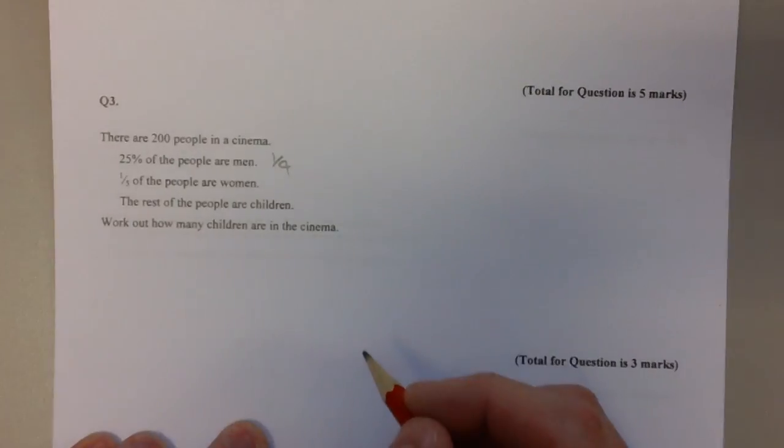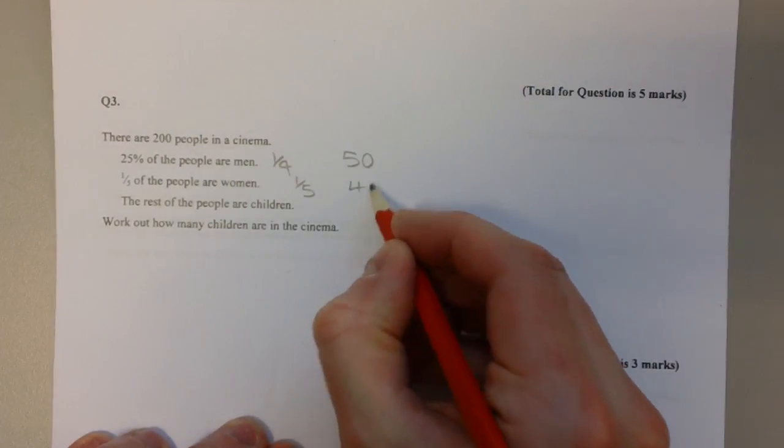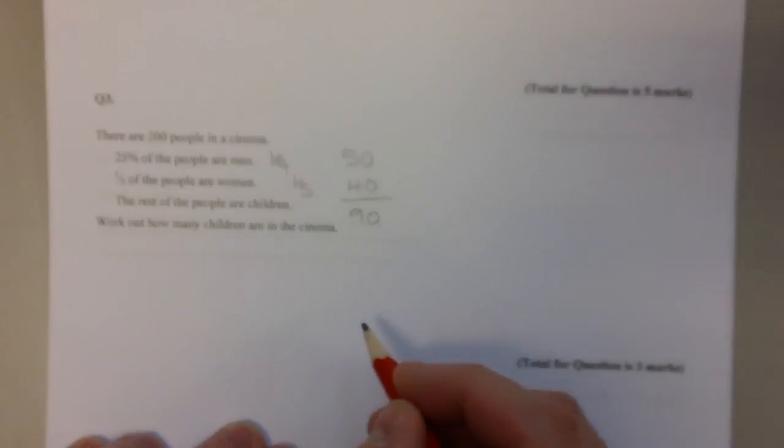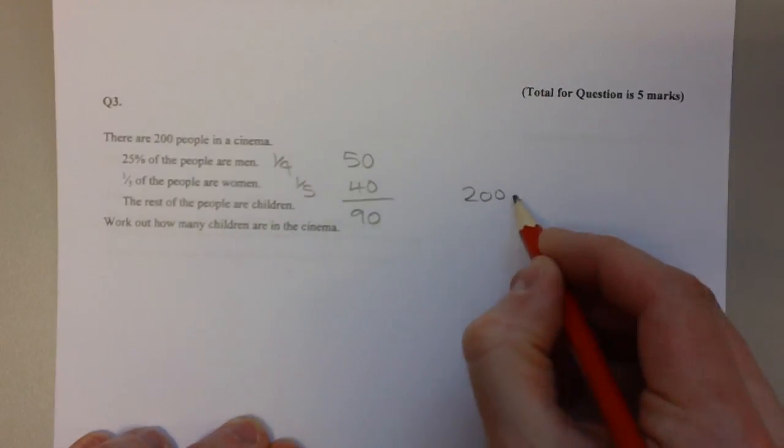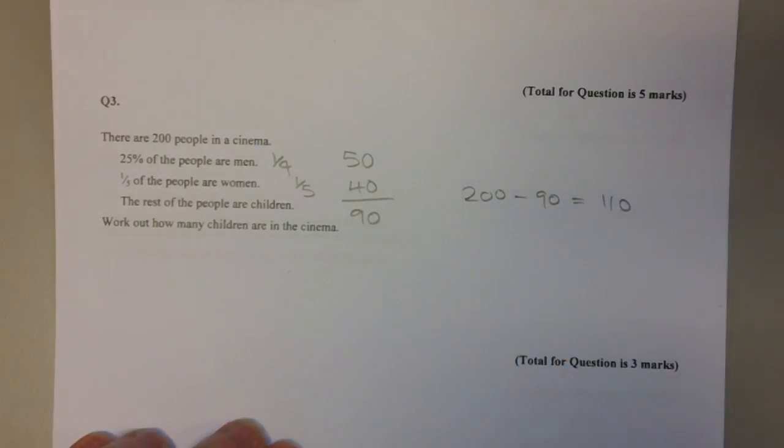Question number three: There are 200 people in a cinema. 25% of the people are men, one-fifth of the people are women, the rest are children. Work out how many children are in the cinema. 25% is the same as one quarter. A quarter of 200 is 50 - half it and half it again. To find a fifth of 200, you divide it by five. There are 40. So there are 90 men and women out of the 200 people. The other lot must be the children. Take away the 90 from 200 - there are 110 children.